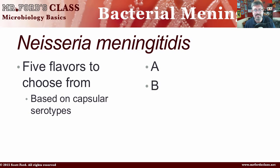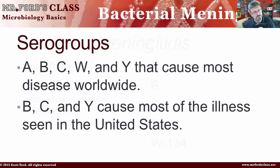There are five different types of this bacteria. Based on capsular serotypes, you have A, B, C, Y, and W134. A, B, C, W, and Y cause most of the diseases worldwide, while B, C, and Y cause most of the illnesses in the United States. Now if you have a microbiology test, this makes a really good question — for example, they might ask what type is the most common cause in America, or which is the most common cause in other countries.